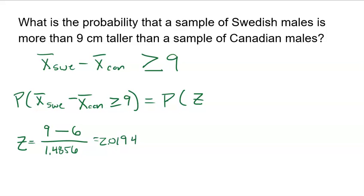Now asking the question about a difference being greater than 9 is equivalent to asking about a Z-score being greater than or equal to 2.0194. To do that on my calculator, I am going to need normal CDF. I'm going to start at that Z-score, and I'm going to go all the way towards infinity, which on my calculator I don't have an infinity, but I'm going to use 99.